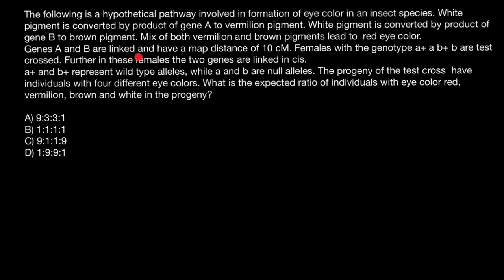Genes A and B are linked and have a map distance of 10 centimorgans. Females with the genotype A-plus/A, B-plus/B are test crossed. In these females the two genes are linked in cis. A-plus and B-plus alleles represent wild-type alleles, while A and B are null alleles. The progeny of the test cross have individuals with four different eye colors. What is the expected ratio of individuals with eye color red, vermilion, brown, and white in the progeny?